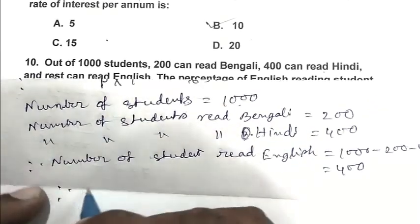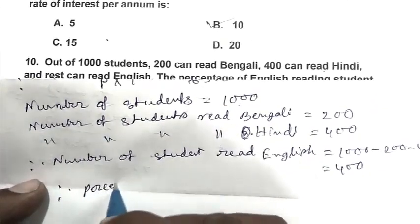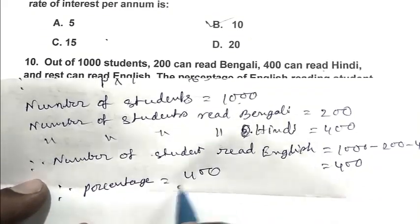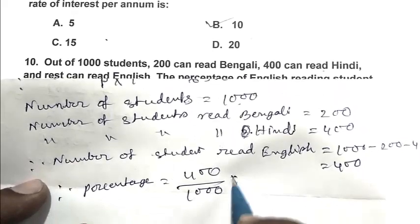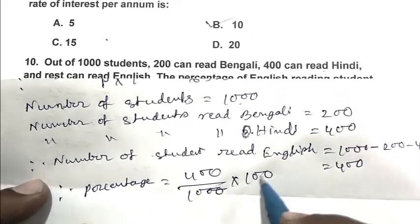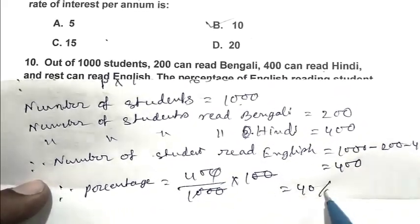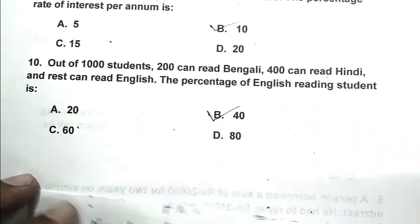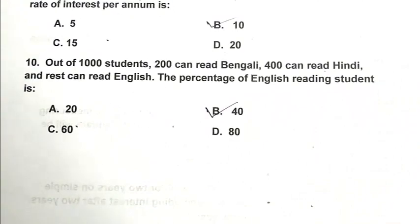So percentage is 400 by 1000 into 100, 40%. So B is the right answer. Thank you for watching. Have a good day.